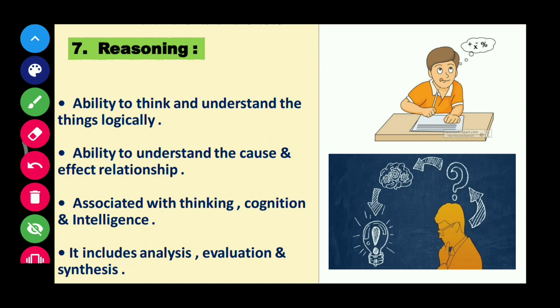Seventh is reasoning ability. Reasoning is associated with thinking, cognition, and intelligence. It includes analysis, evaluation, and synthesis. These are the seven primary mental abilities according to Thurstone.